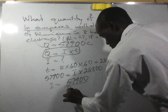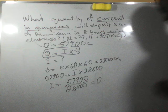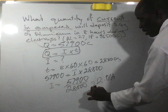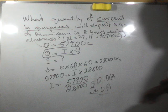That will give us 2.01, or we can say approximately 2 amperes. That's the quantity of current that can deposit 5.4 grams of aluminum in 8 hours.